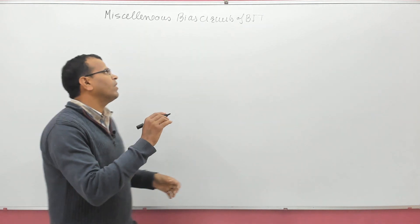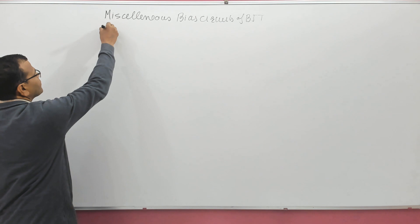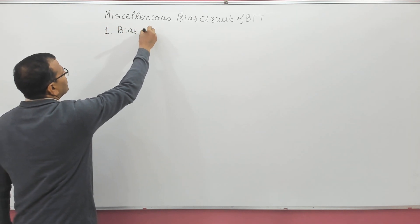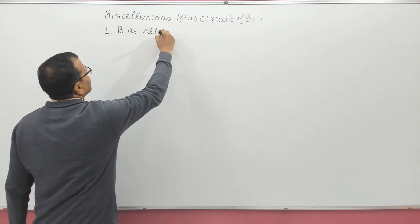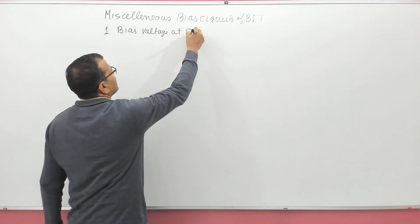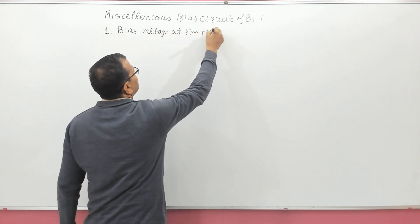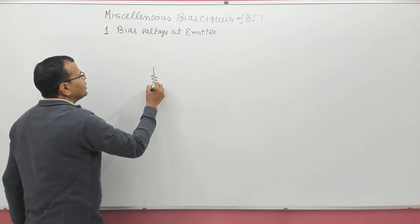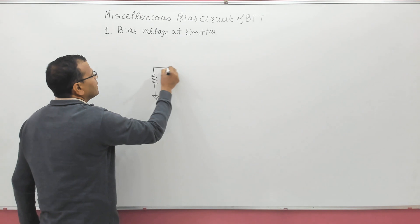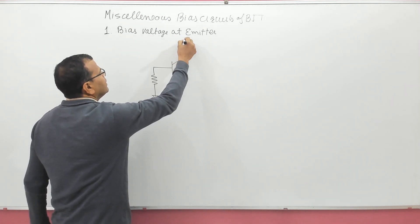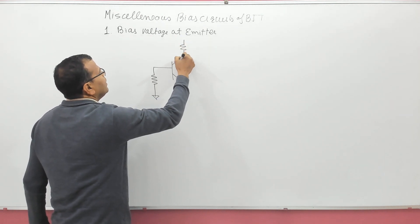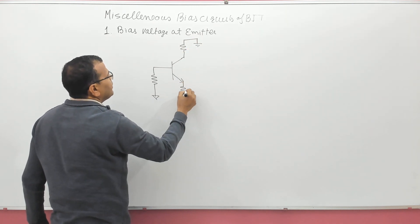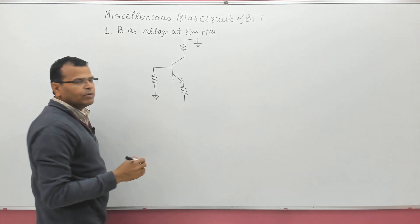The very first circuit I will be talking about is the biased voltage at the emitter terminal. That means I have a circuit where the biasing voltage is not connected at the collector; rather it is connected at the emitter terminal. The collector is grounded and the emitter terminal is connected to a biasing voltage.